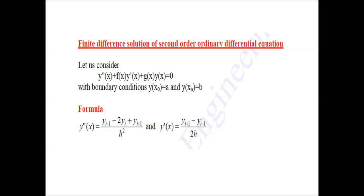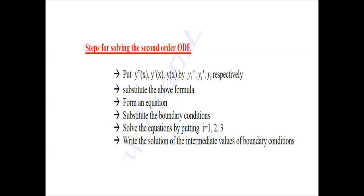Now let us see the procedure to solve the finite difference method for a second order ordinary differential equation. In the question they will give you y'', y', and y. First, substitute your y'' and y' finite difference formulas into the equation, so that it forms a simple equation with only three values of i. After forming the equation, substitute your boundary conditions along with h, so you can determine your i values.